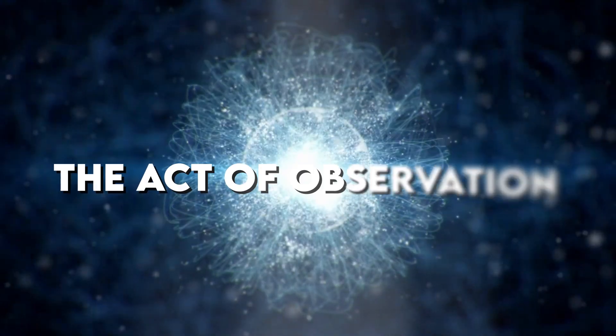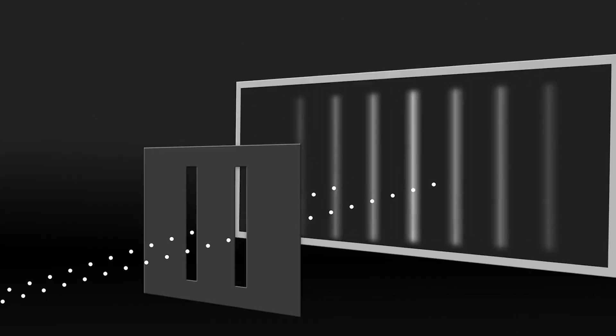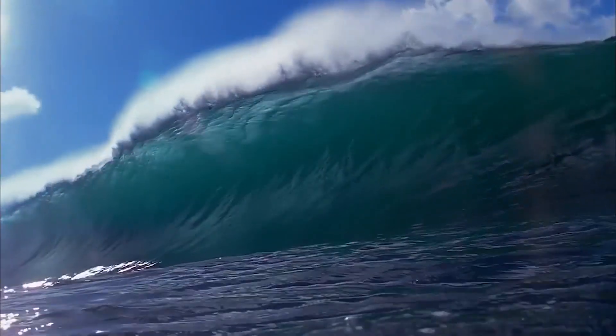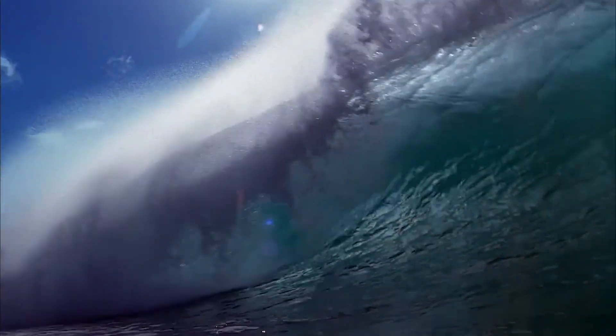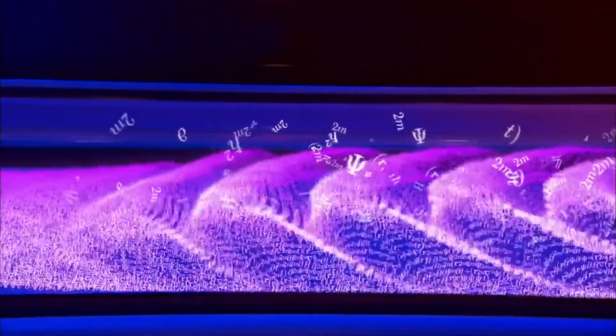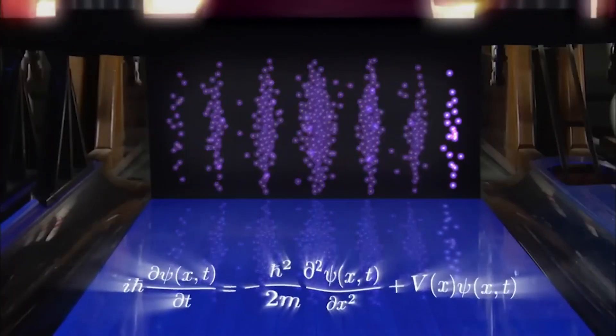The act of observation. To determine which slit a particle goes through, scientists introduce detectors at the slits. But here's where things get even stranger. When the path of a particle is observed, the interference pattern disappears, and the expected two bands form on the screen. This suggests that the mere act of observation alters the outcome of the experiment. It's like the electrons knew they were being watched, so decided to behave as we would want them to.